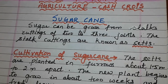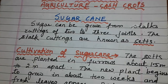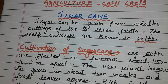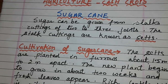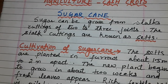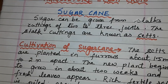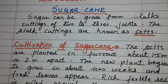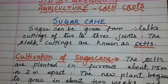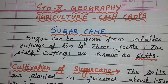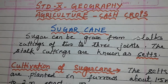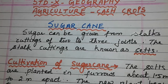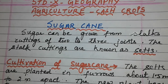All of you know about sugarcane, so we will discuss cultivation — what type of cultivation is done, what are the geographical conditions required for sugarcane, what type of soil, temperature, rainfall, etc., and what are the probable questions from this sugarcane chapter.